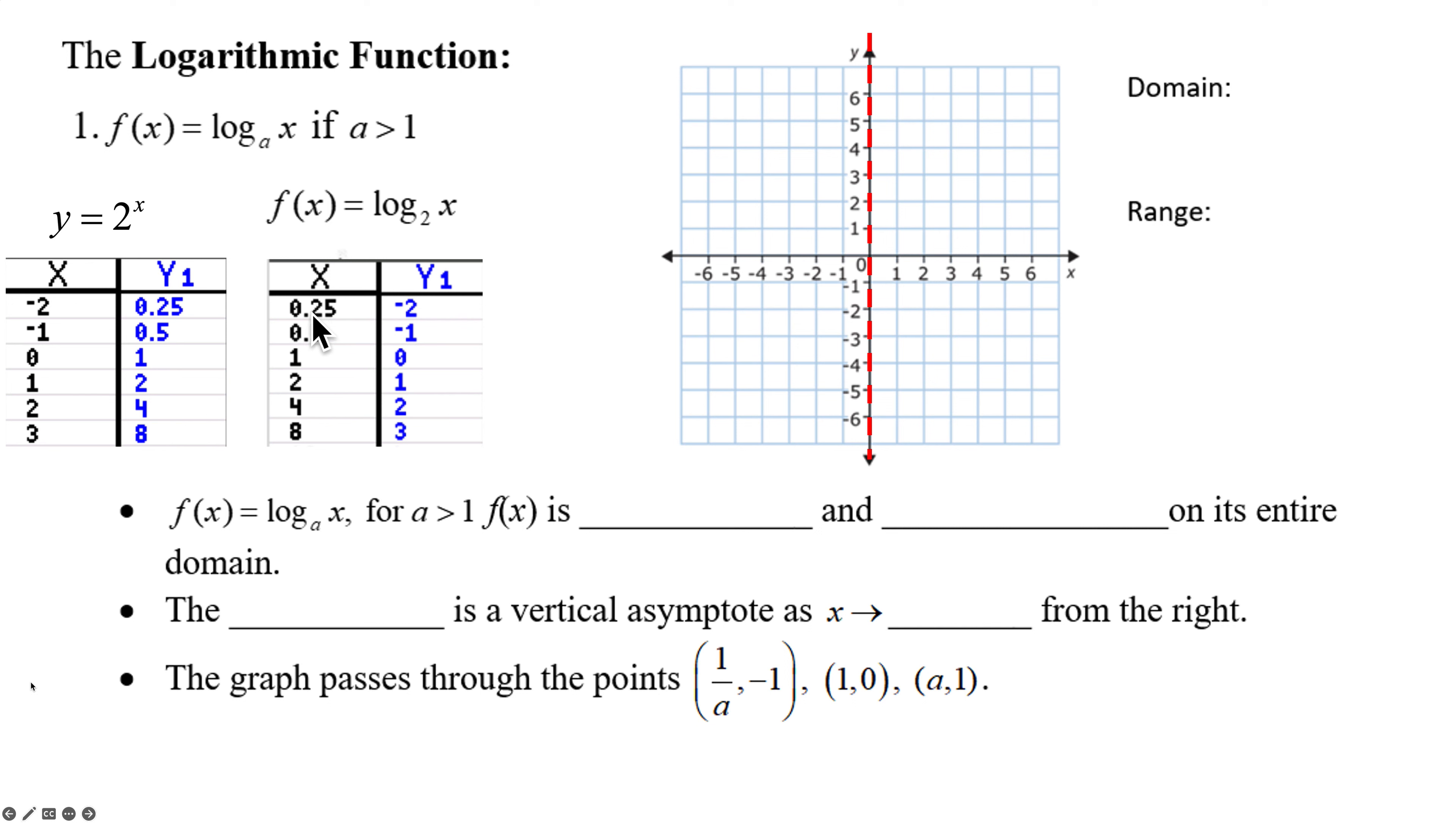And I'll start to plot these points at 0.25, negative 2, 0.5, negative 1, 1, 0. There's my common point. 0, 1's now change to 1, 0. Then we have 2, 1, 4, 2, and then of course 8, 3. If you want to plot it out there, there is my curve.